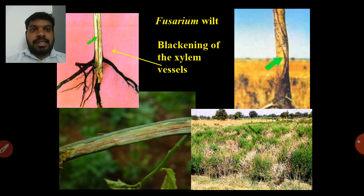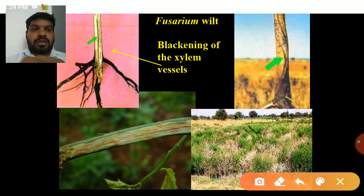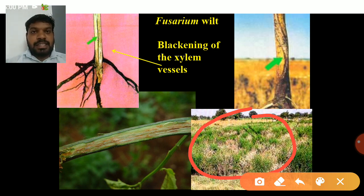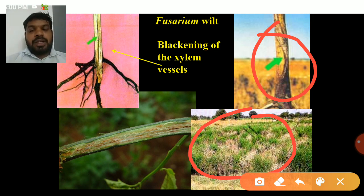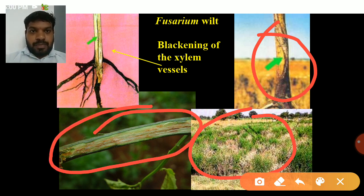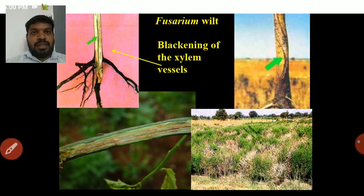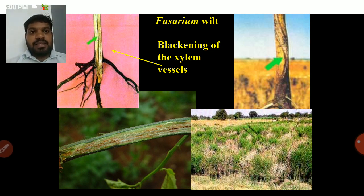Fusarium wilt is one of the important diseases in red gram. Severely infected fields show wilt patches across the field. Wilted plants mainly infect the root and stem, targeting the xylem and phloem vessels. Infected xylem and phloem vessels show brown discolorations, turning to black color at their severe state. If you split open the infected stem, you can see the black color discoloration.